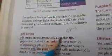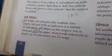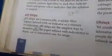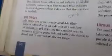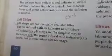pH strips are commercially available. Filter paper infused with an indicator or a mixture of indicators. pH strips are the simplest way to measure pH. The paper is infused with an indicator cut in size.